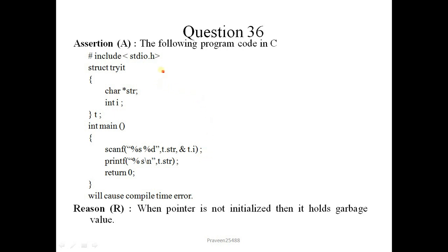Next question is the following program code in C. So here is the program is given. We will cause compile time error. Here you observe that in this there will be compilation time error. In this line there is an expected expression before this percentage token. So there is a compile time error. So this statement is correct. While pointer is not initialized then it holds garbage value. This means it is also correct, but it is not the correct explanation of assertion. So correct option is 2.